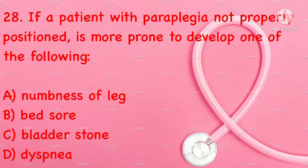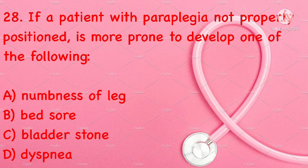If a patient with paraplegia is not properly positioned, they are more prone to develop: numbness of leg, bed sore, bladder stone, or dyspnea. Correct answer is B: bed sore.